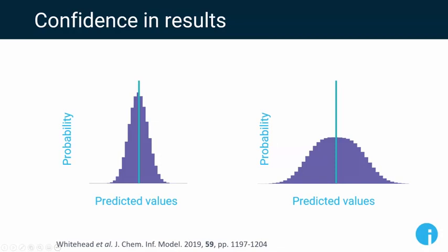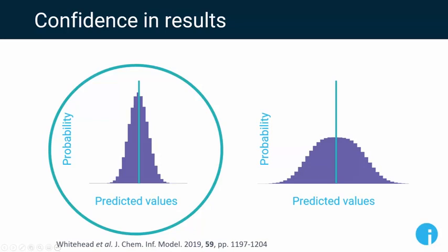Instead of generating just a number, Alchemite generates a histogram — a probability distribution of potential results. Sometimes that distribution is very sharply peaked and narrow, meaning Alchemite is confident the prediction is close to true. Other times it's very flat and broad, meaning Alchemite is saying it doesn't know. By focusing only on confident predictions, we're able to increase their utility by making sure they're more accurate.